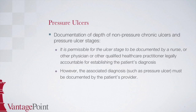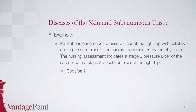The guidelines for ICD-10 state that it is acceptable for a nurse to document the stage of the ulcer. However, the actual diagnosis of pressure ulcer must be documented by the physician, APRN, or PA. Now let's try some examples. Patient has gangrenous pressure ulcer of the right hip with cellulitis and a pressure ulcer of the sacrum documented by the physician. The nursing assessment indicates a stage 2 pressure ulcer of the sacrum with a stage 3 decubitus ulcer of the right hip. How would you code this?